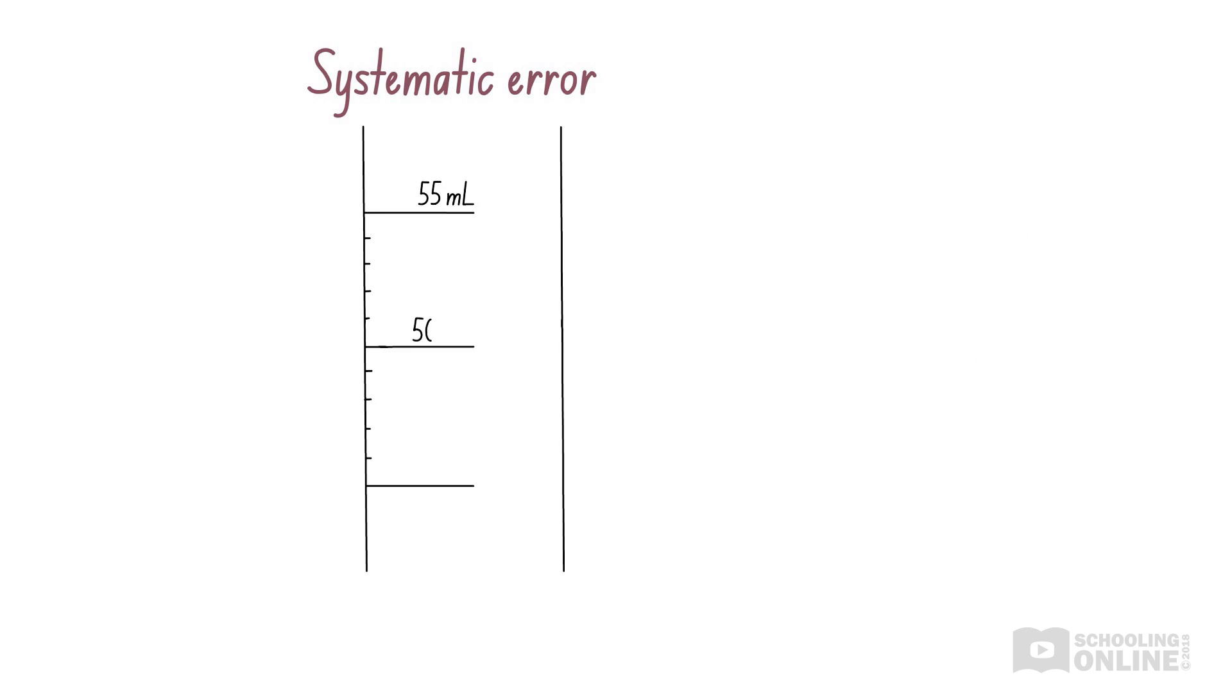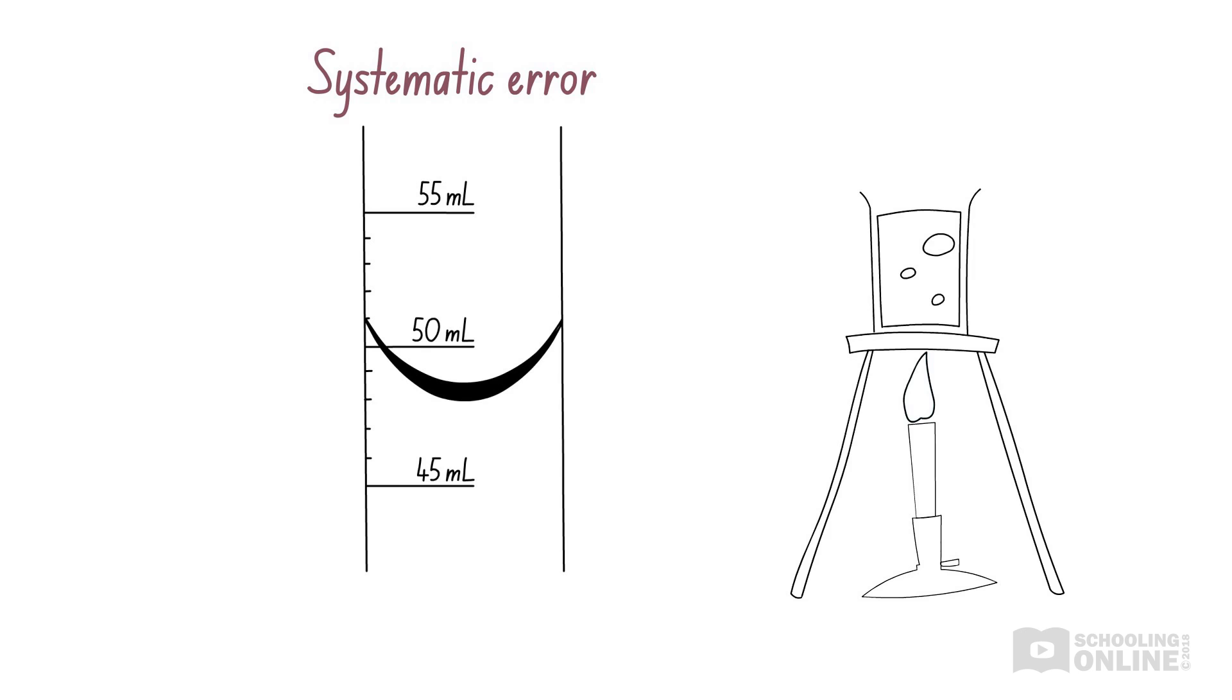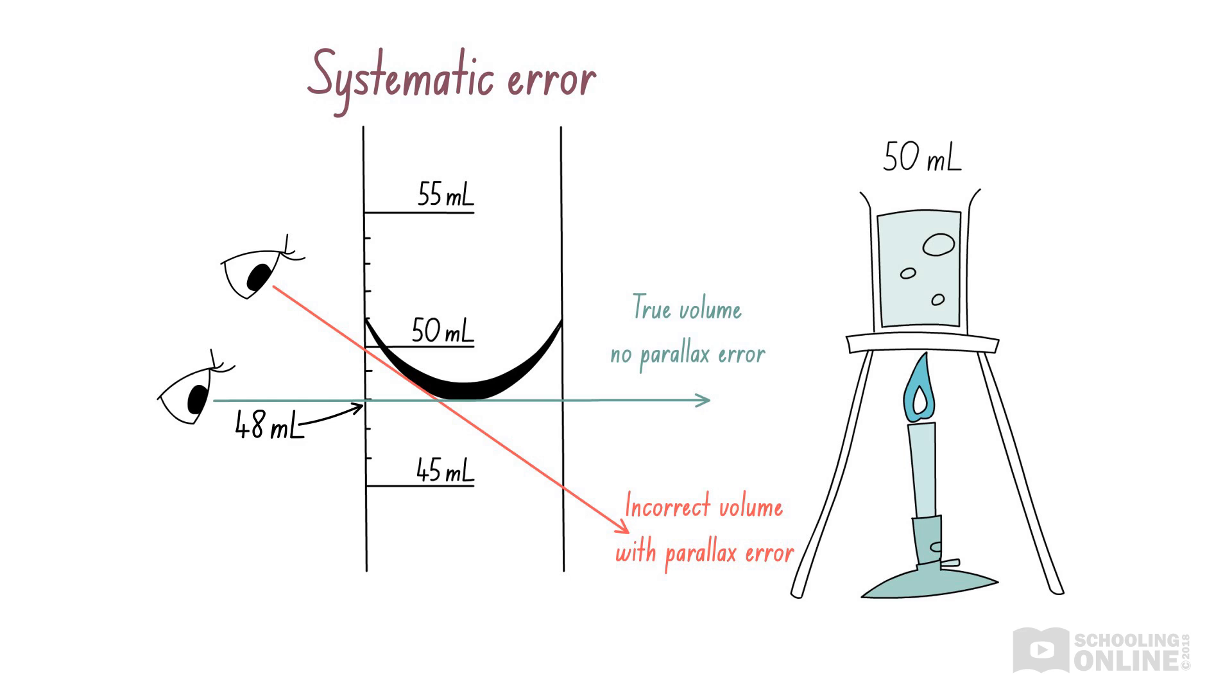Now, imagine we are performing an experiment to measure how long it takes for 50 milliliters of water to boil. However, when we pour and measure 50 milliliters of water, we look from above the meniscus. This is incorrect. Instead, we should measure the volume of water by looking from eye level. If so, we would realize that we only have 48 milliliters of water. Because of parallax error, we measure out slightly less water, so our water will boil faster.